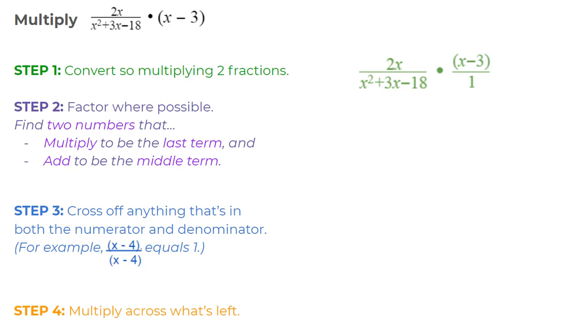Now we're going to look at the numerator and the denominator of each of our fractions, the top and bottom of each fraction, and see if we can factor it any further. If we look at the first fraction, that denominator, x squared plus 3x minus 18, I can factor that further.